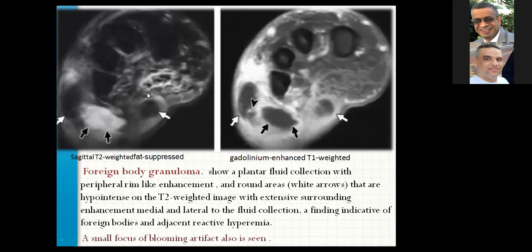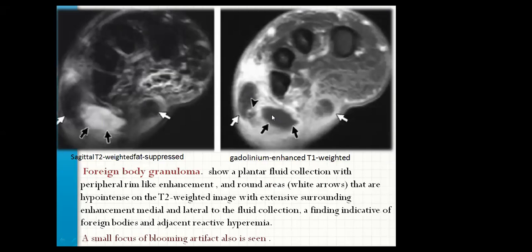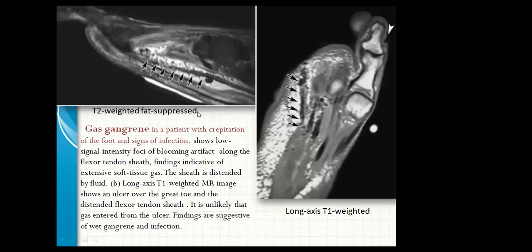Foreign body granuloma: MRI imaging shows a plantar fluid collection with peripheral rim-like enhancement and round areas that are hypointense on T2, medial and lateral to the fluid collection — findings indicative of foreign body and adjacent reactive hyperemia. A small focus of blooming artifact is also seen. Gas gangrene in patients with crepitation of the foot and signs of infection: MRI shows low signal intensity foci of blooming artifact along the flexor tendon sheath — findings indicative of extensive soft tissue gas. The sheath is distended by fluid. A long-axis T1-weighted MRI image shows an ulcer over the great toe and a distended flexor tendon sheath, suggestive of wet gangrene and infection.